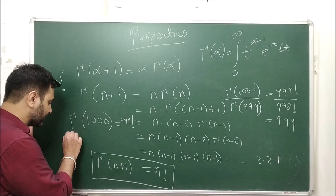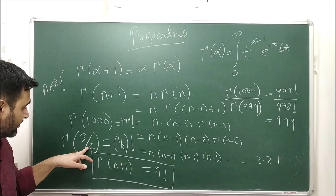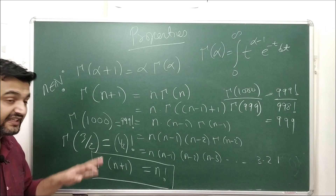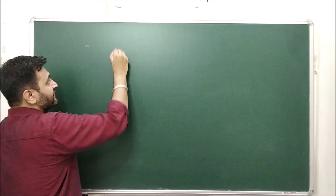One important note: the factorial relation Γ(n+1) = n! is only true for natural numbers. Many students, when asked what is Γ(3/2), just reduce 1 to get 1/2 and say '1/2 factorial' — but no, this is not true for rational numbers or negative real numbers. It is only valid for natural numbers. The recurrence property Γ(α+1) = α · Γ(α) holds for every α in the domain.